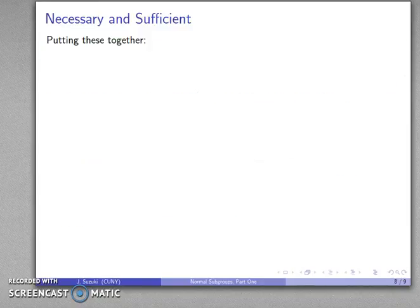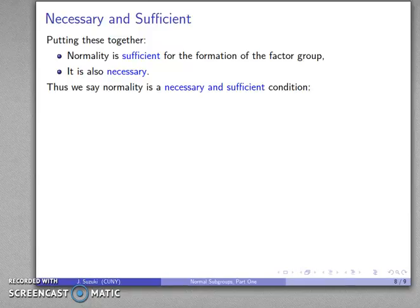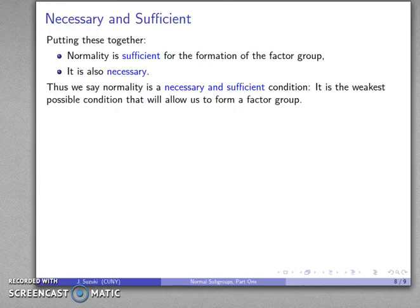And if I put that together, what that tells us is that normality is enough for the formation of factor groups. It's also necessary, and we say that normality is a necessary and sufficient condition. It is the weakest possible condition that will allow us to form a factor group.